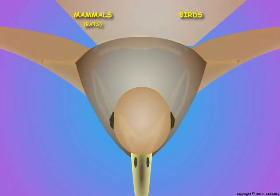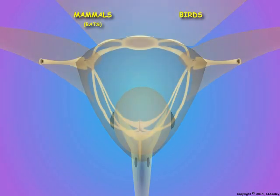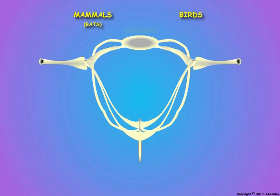Here is a cross section through the thorax of a bird at the level of the wings. Birds have a large breast bone or sternum with an enlarged keel-like structure called the carina, and both flight muscles attach to the sternum.